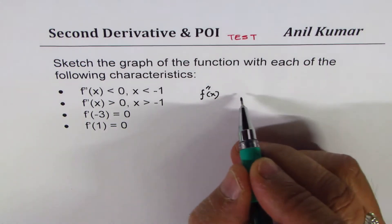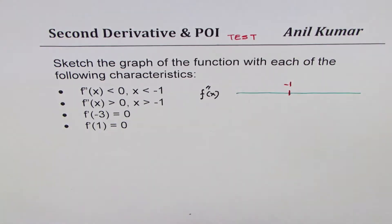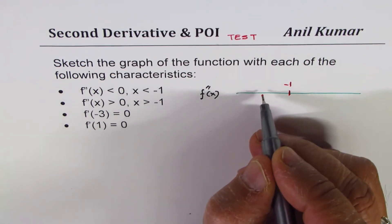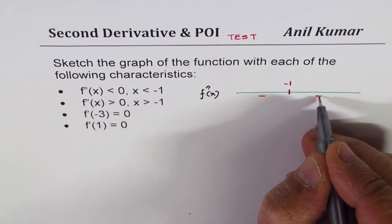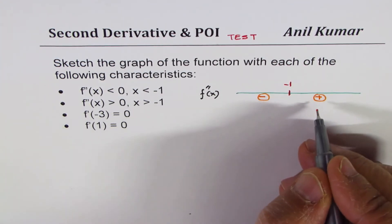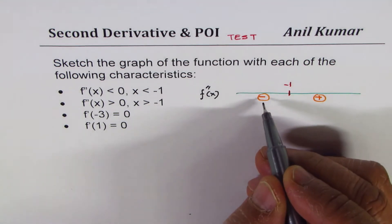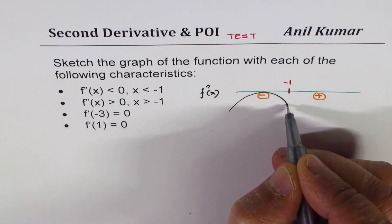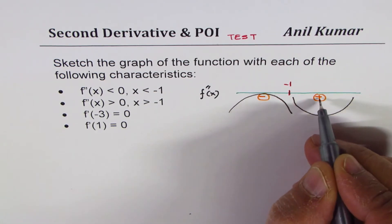Let's analyze the second derivative. When x is less than -1, the second derivative is negative, which means the function is concave down. When x is greater than -1, the second derivative is positive, which means the function is concave up. So the second derivative is changing sign as we move across x = -1.